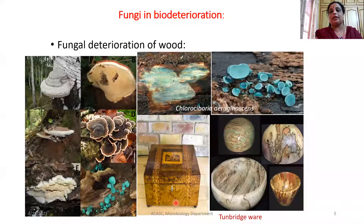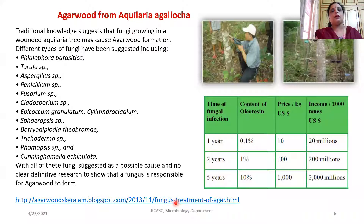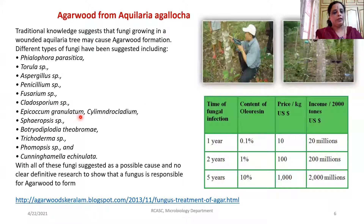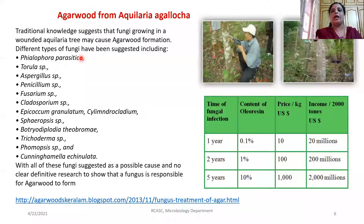These wood products have been extensively used in the market and have got a high economic value. We also studied one more aspect of fungi infecting a particular kind of wood. For example, a plant called Aquilaria agallocha has been infected by certain fungi, especially Epicoccum granulatum, which has been extensively studied. This particular fungi gives a particular odor or smell to the wood, where that wood has been marketed as agarwood and it has got a high economic value.